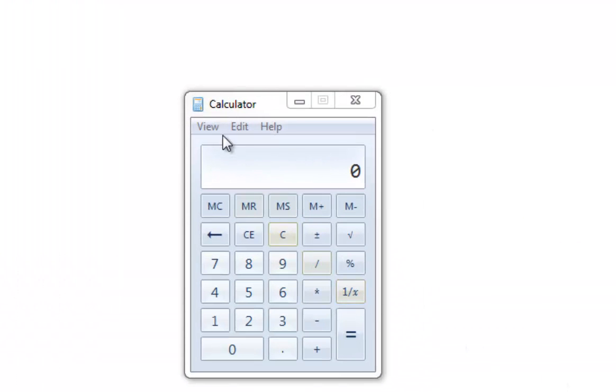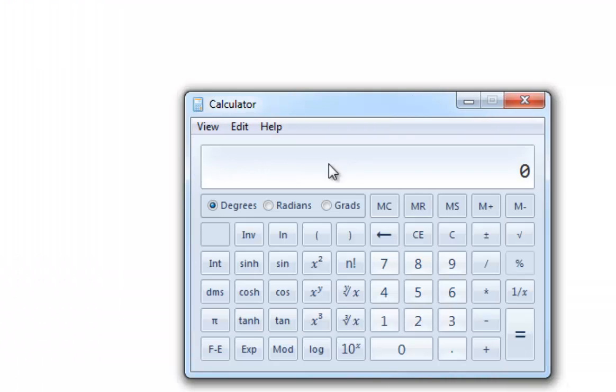First we'll turn it to scientific mode. Then I'll be sure it knows to use degrees. Now I'll type 25 and hit the sine button. Now, different calculators may have you hit the sine key first, so check your answers to make sure that you're doing what your calculator expects. I got .422618261, and it keeps going.